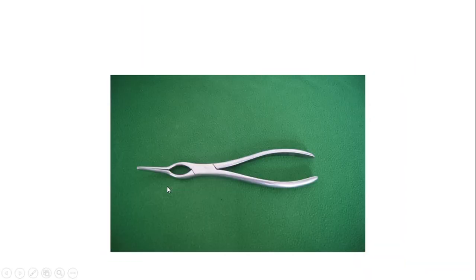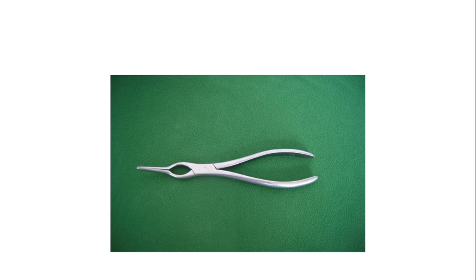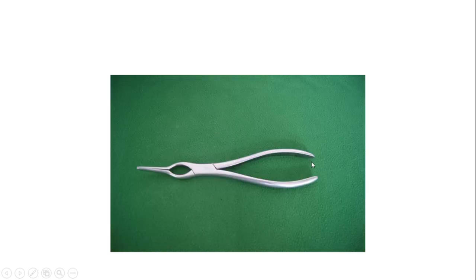This is the kidney tray. Next is the Ash forceps, which should be differentiated from the Walsham forceps. If you look at the Ash forceps, the two tips are bent and do not close completely. The Ash forceps is used to reduce fractures of the nasal septum. For the Walsham forceps, if you remove the rubber covering, the two ends close completely — one end is straight and goes inside the nasal cavity, and the other is bent toward the skin, so it does not damage the skin. It is used to reduce fractures of the nasal bone.